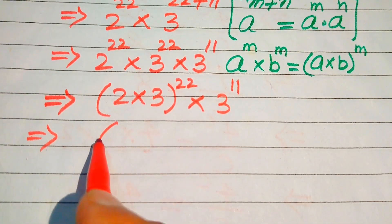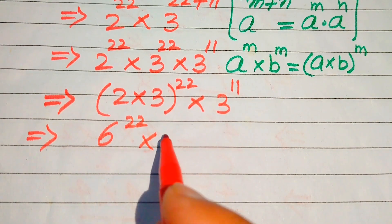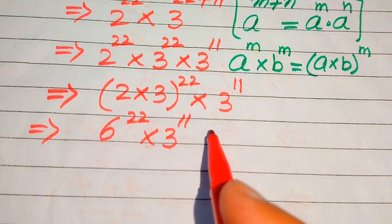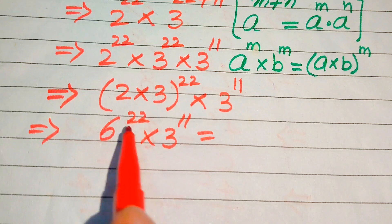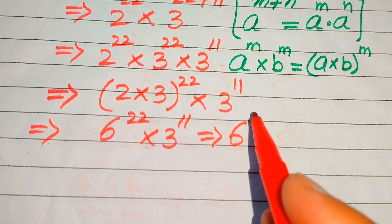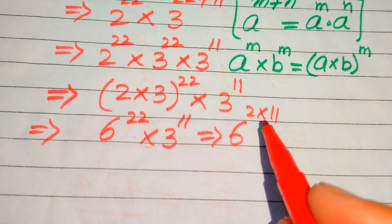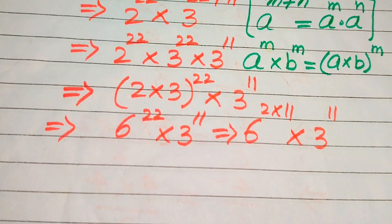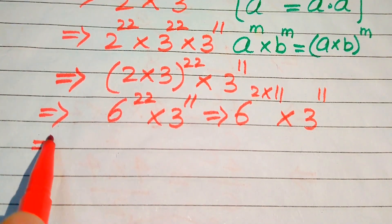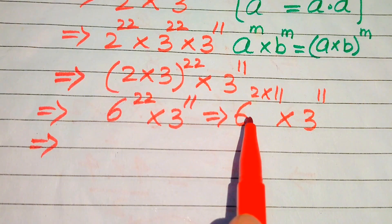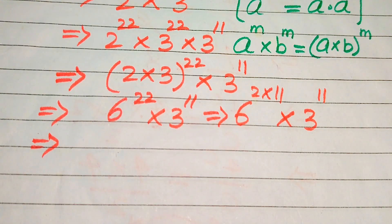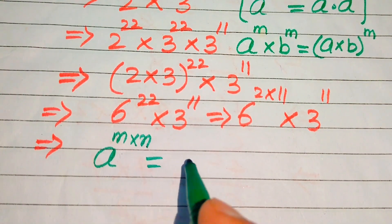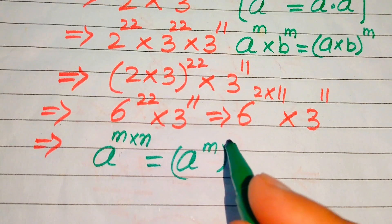2 times 3 becomes 6, so we have 6 to the power of 22 multiplied by 3 to the power of 11. In the next step we break the exponent 22 as 2 multiplied by 11 — since 2 times 11 equals 22 — giving 6 to the power of (2 multiplied by 11), multiplied by 3 to the power of 11. We now use the exponent law: a to the power of m times n equals (a to the power of m) to the power of n.